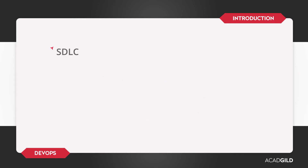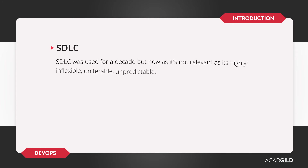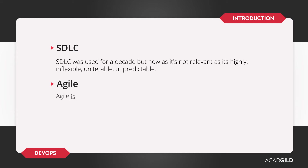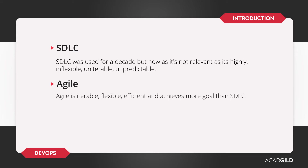This is due to its highly inflexible, un-iterable, and unpredictable qualities. Whereas the Agile development model is extremely flexible and re-iterable, which achieves more goals compared to SDLC Waterfall and is more efficient and productive.